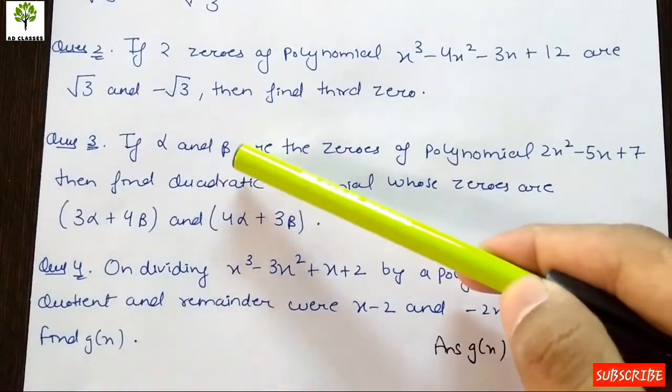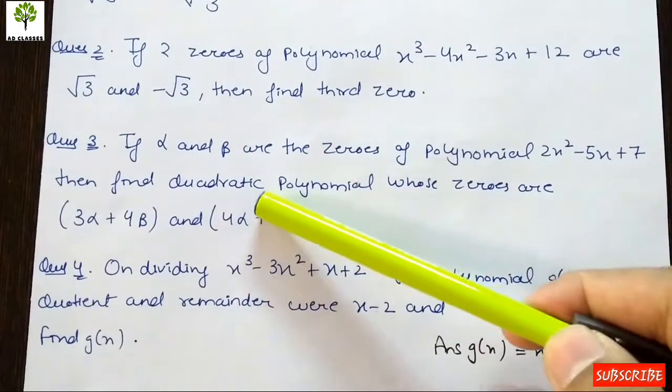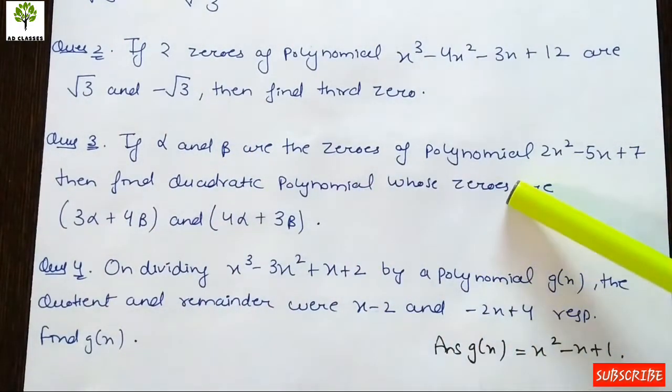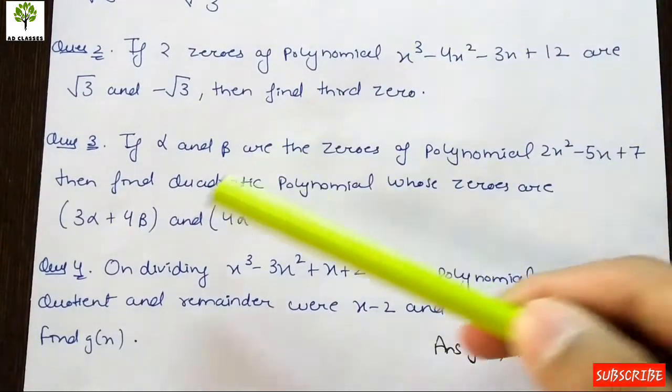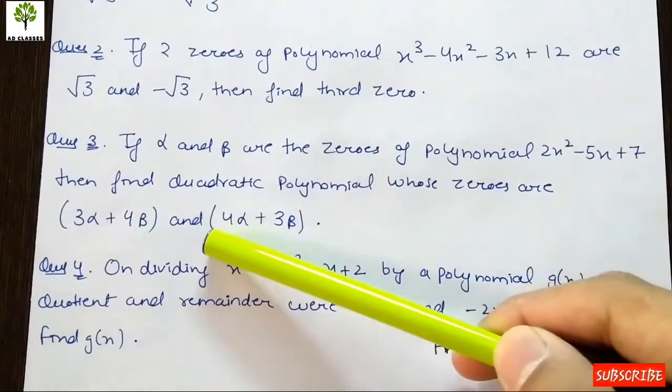...then find the quadratic polynomial whose zeros are (3α + 4β) and (4α + 3β). This is a very important question.